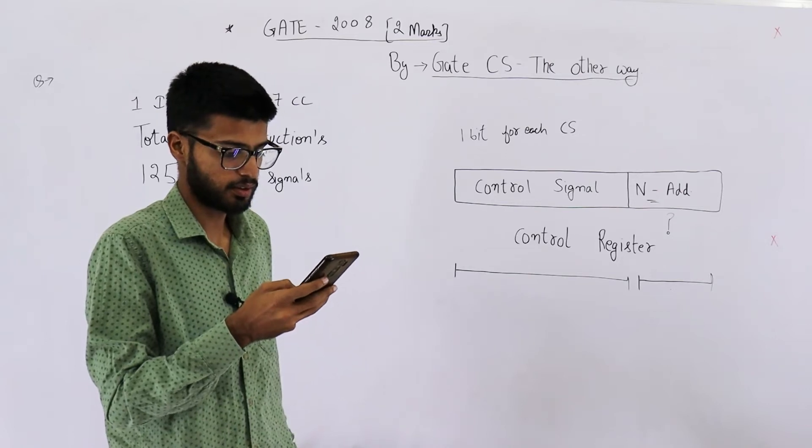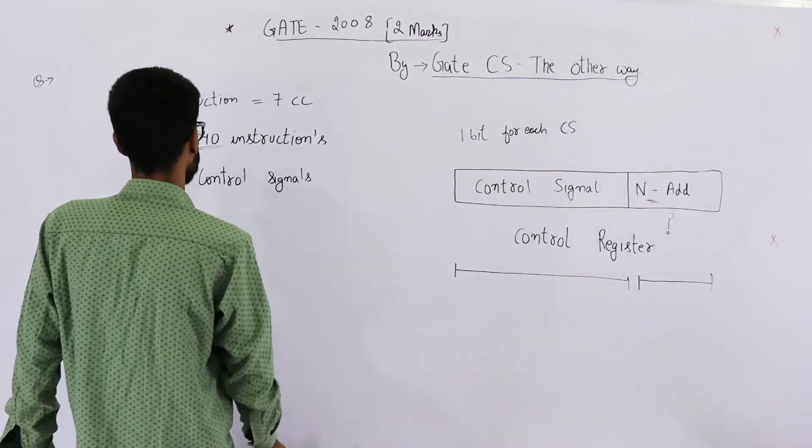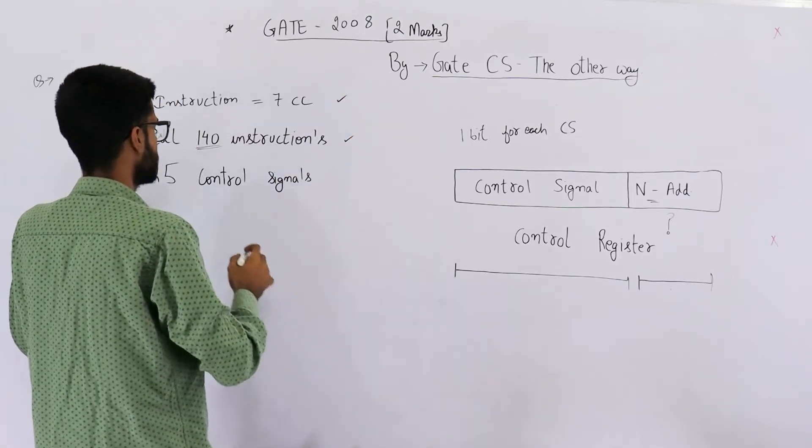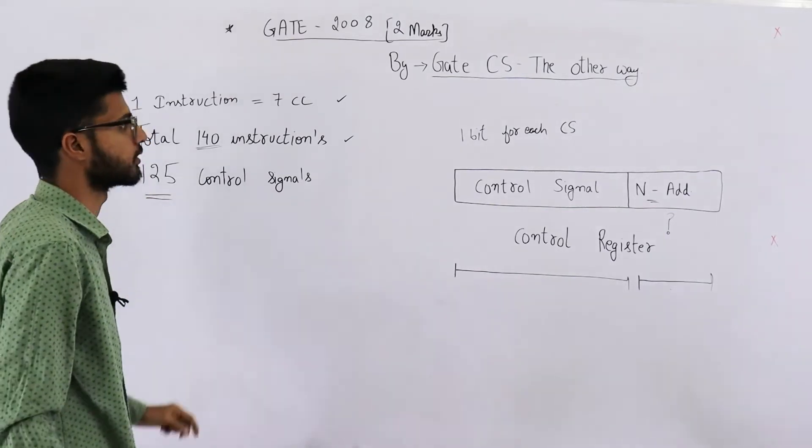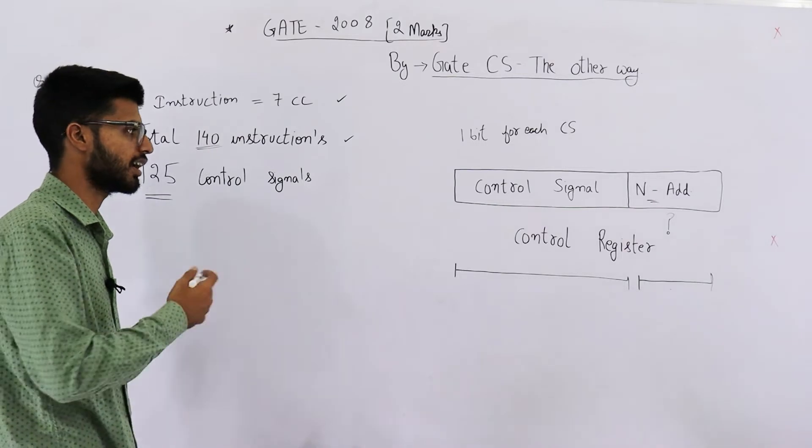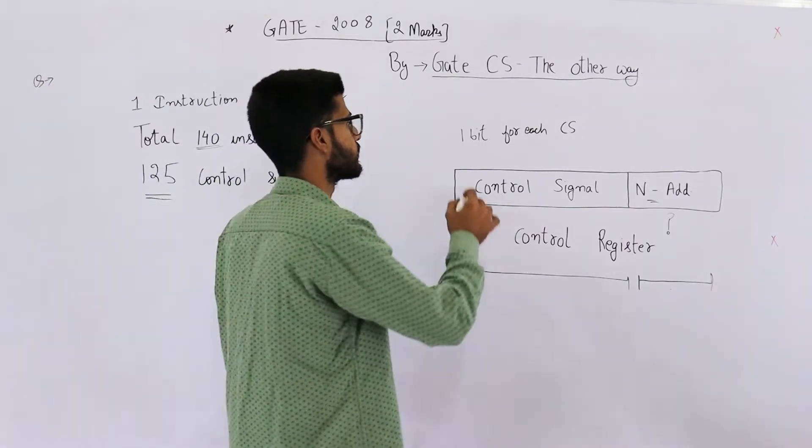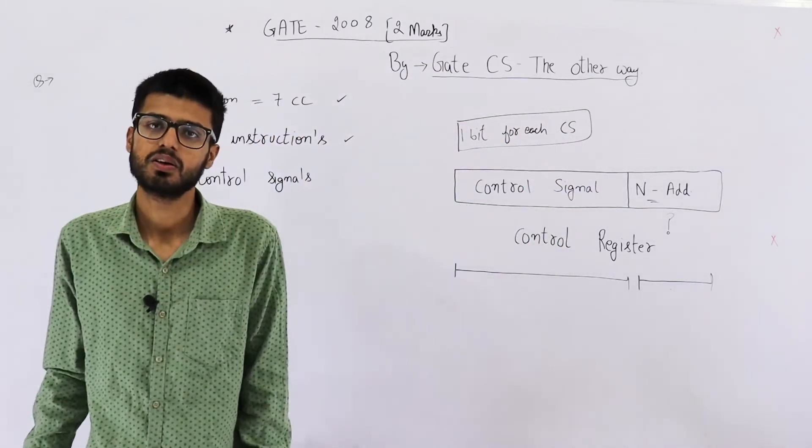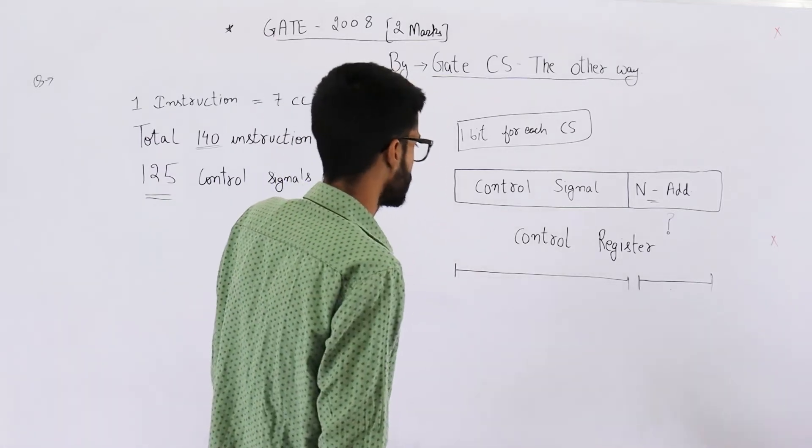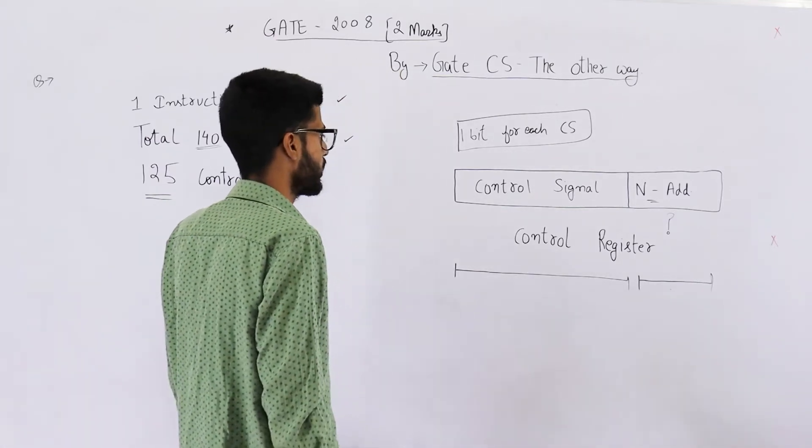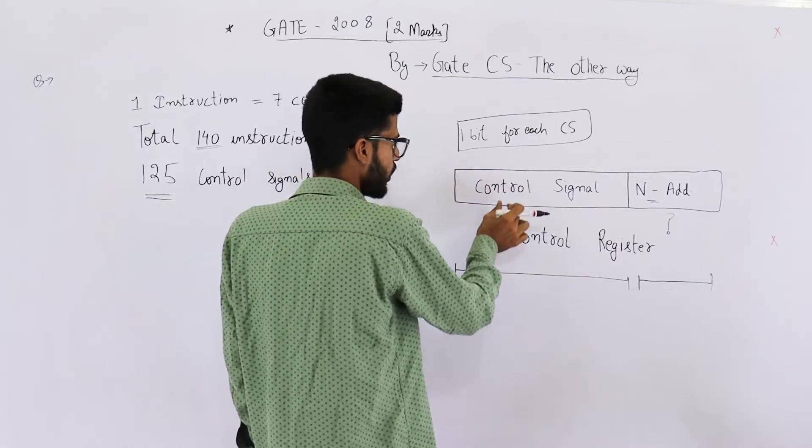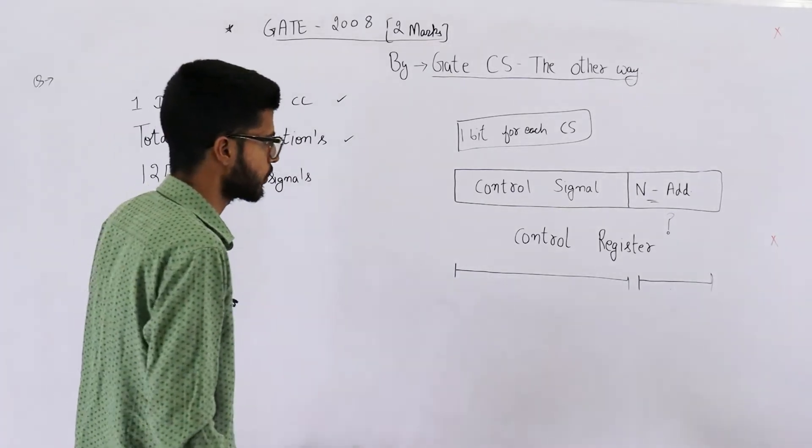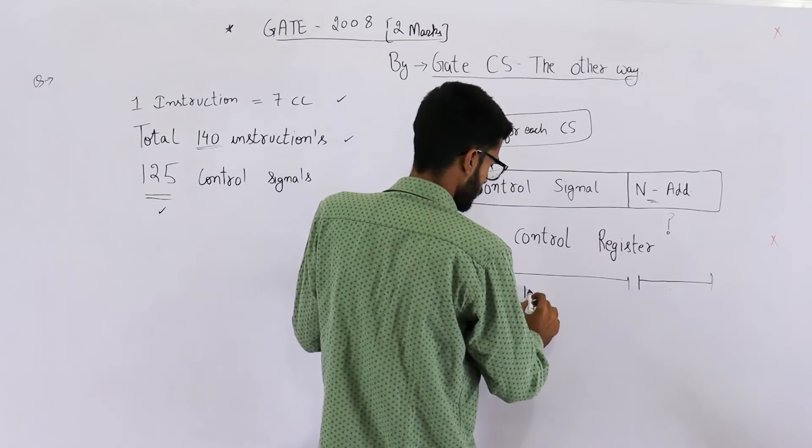Now they are saying we have 125 control signals in total. One instruction takes seven clock cycles. Total we have 140 instructions and 125 control signals. Because in total there are 125 control signals, we need to reserve one bit for each control signal because this is a horizontal microprogrammed control unit. Horizontal microprogramming means one bit for each signal.